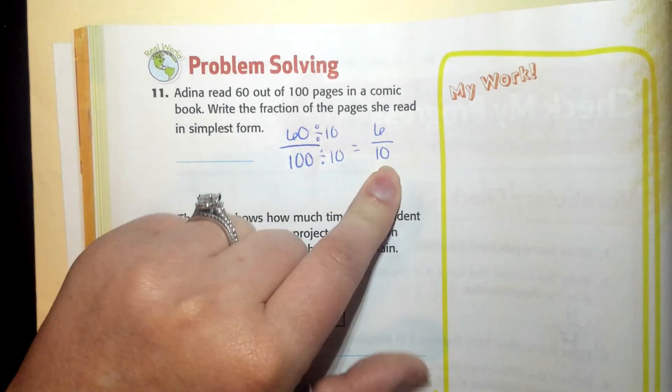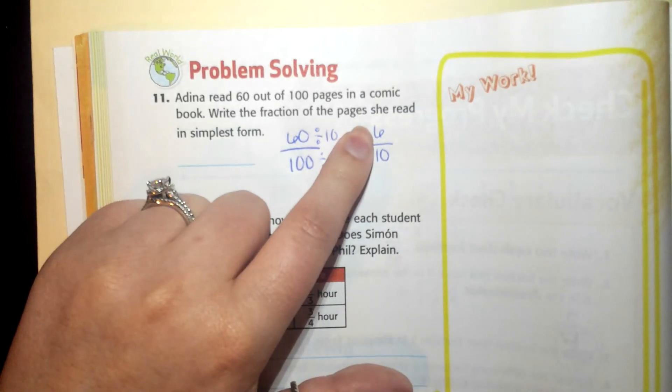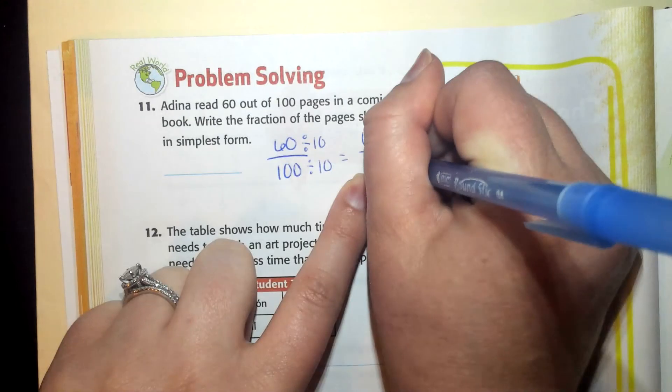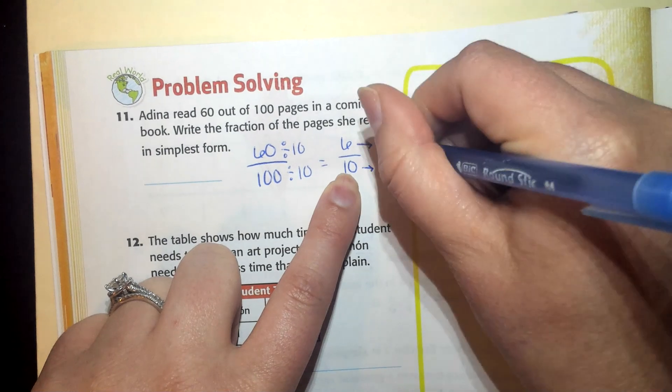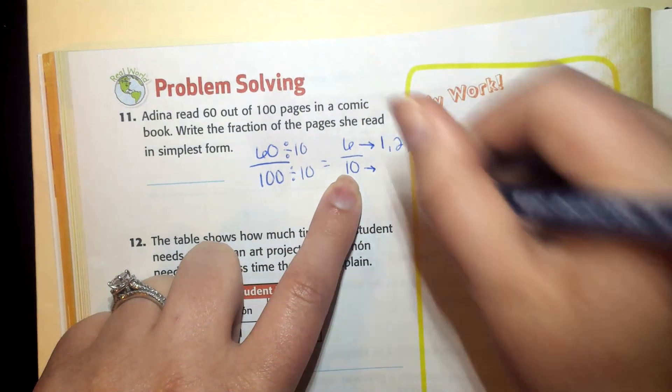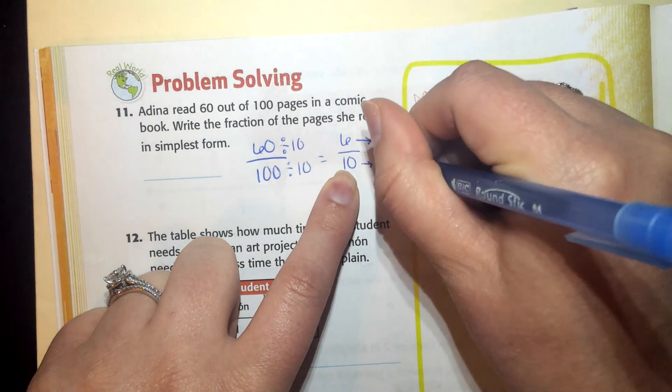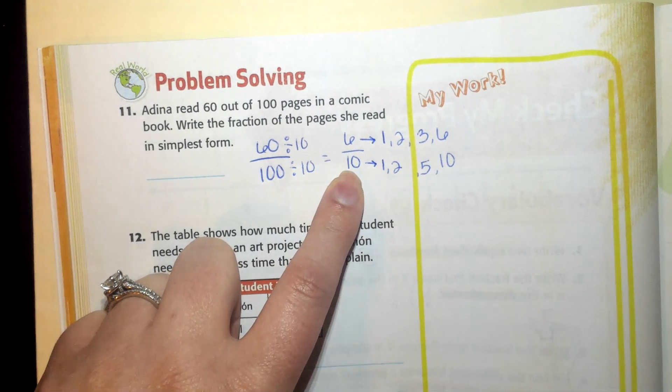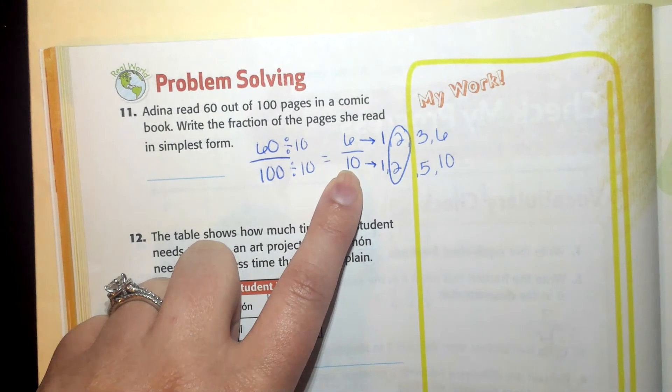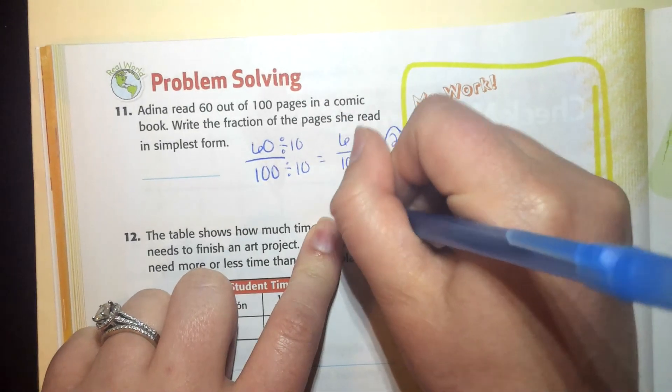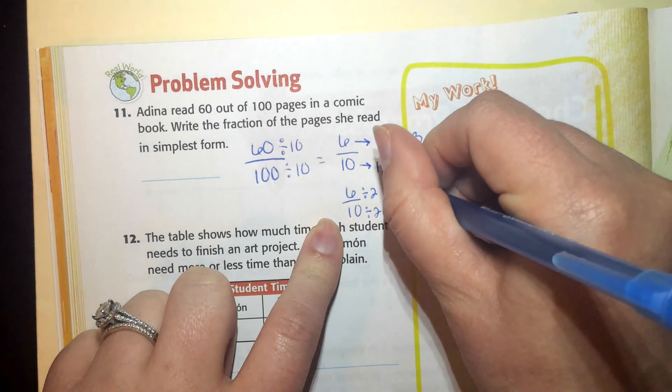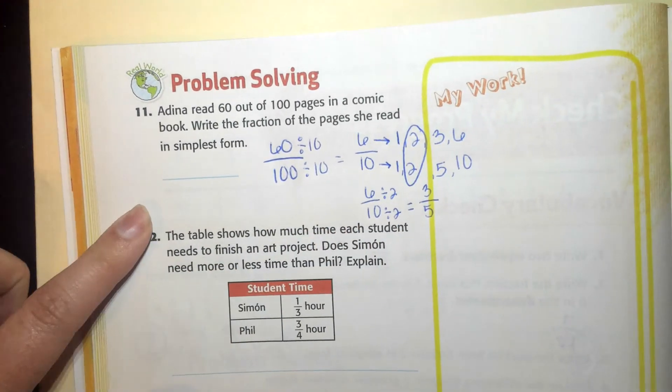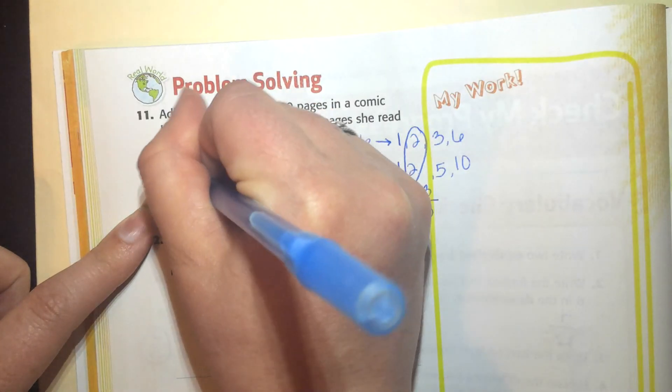But I'm pretty sure this isn't in simplest form just yet because I know six is divisible by two, and 10 is also divisible by two. So I think what I want to do now that it's pretty small is list the factors of both of these numbers and look for the greatest common factor. So the factors of six are one and six, and two and three. The factors of 10 are one and 10, two and five. I'm going to circle my greatest common factor, which is two. And now I'm going to take six-tenths and divide it by two. Six divided by two is three. 10 divided by two is five. So 60 over 100 in simplest form is three-fifths.